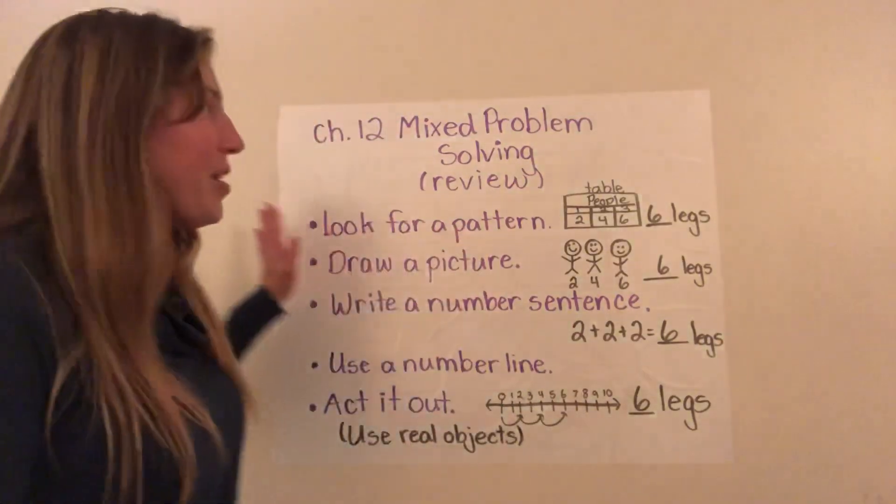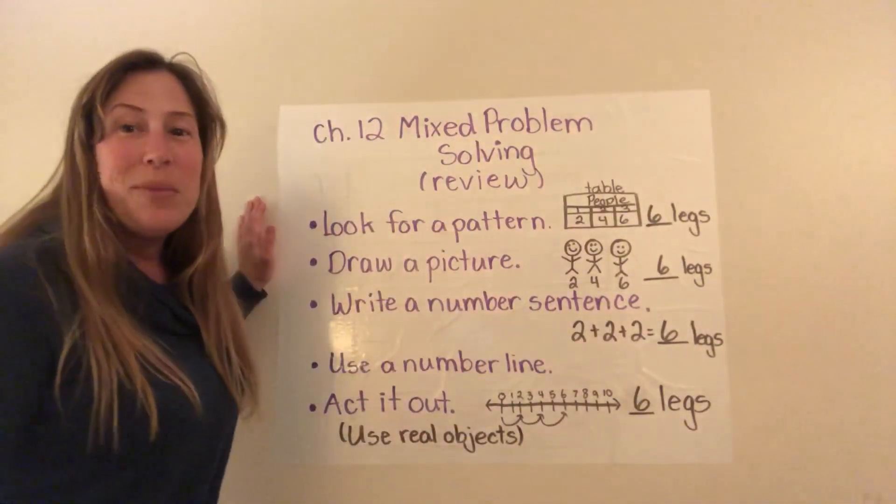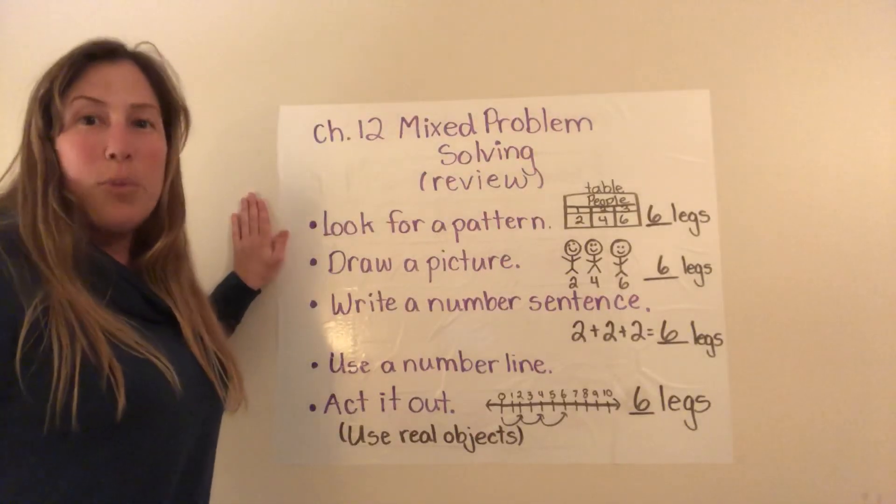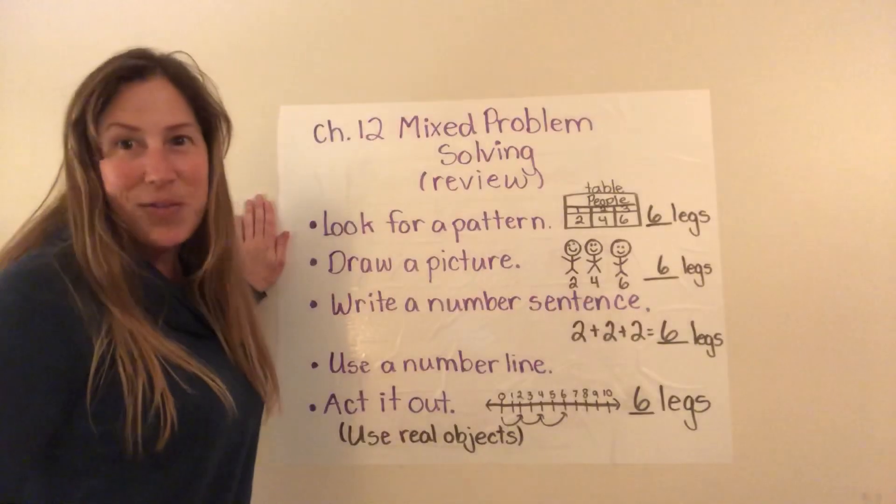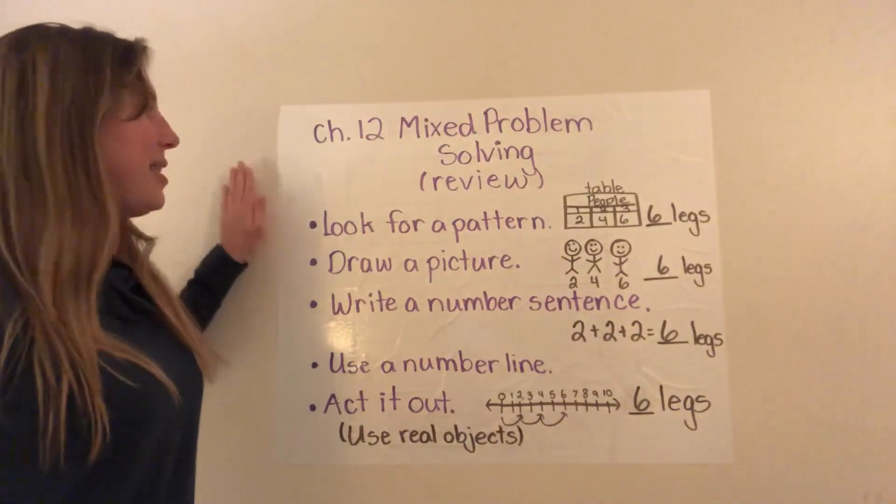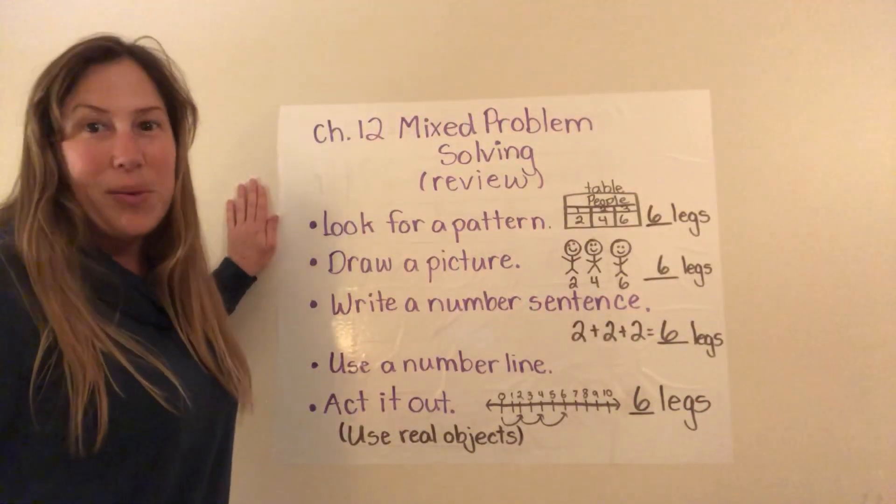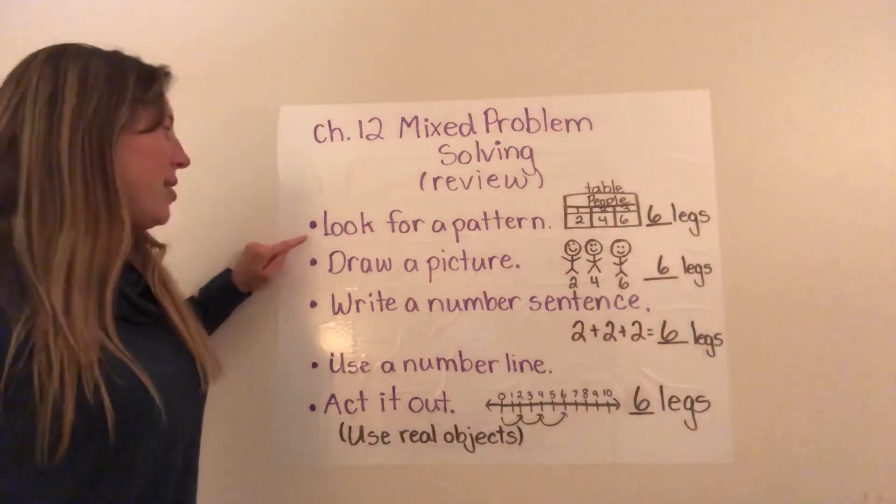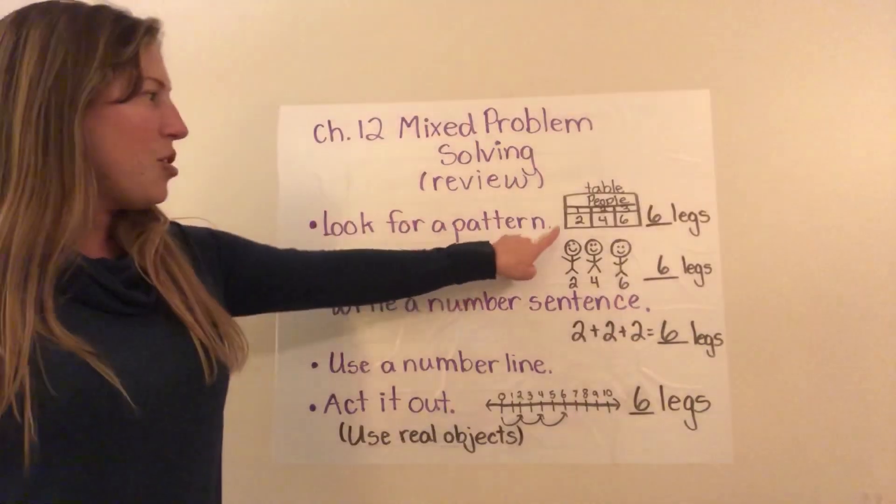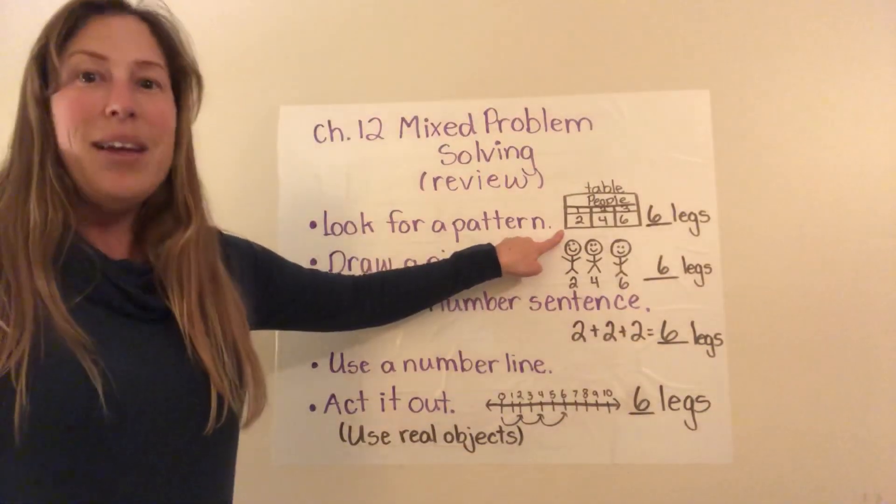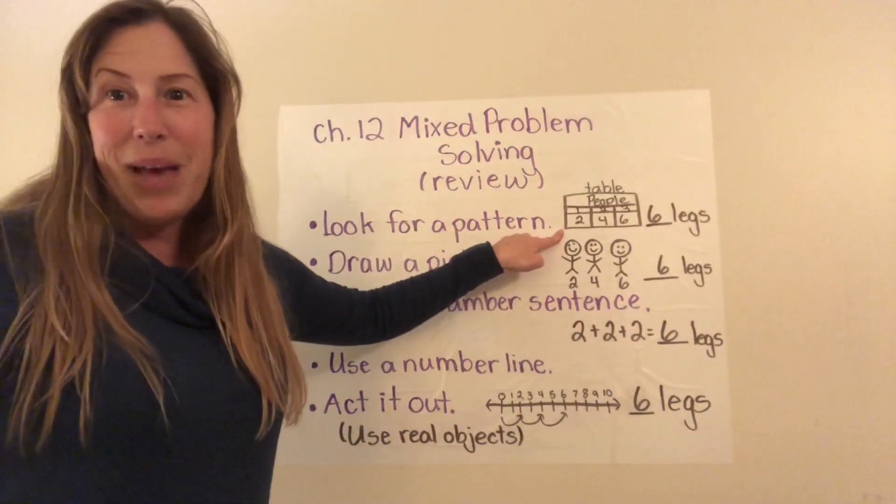All right, so let's look over here. I've put on our board some of the strategies that we've learned for problem-solving, and she could go about any one of these ways to figure out this problem. So let's take a few minutes to review these different ways. One of the ways she could do this is she could look for a pattern. Yesterday I introduced you to a table. This is a great way to see what patterns there are.